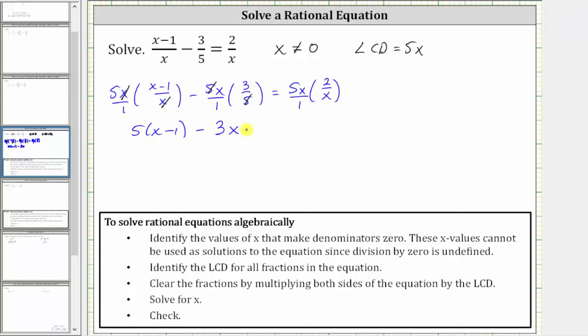So we have minus three x equals on the right side. X divided by x simplifies to one here, leaving us with five times two, which is 10.